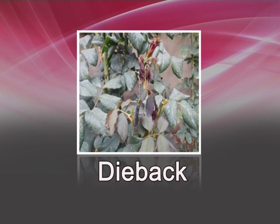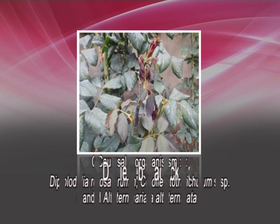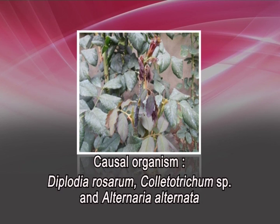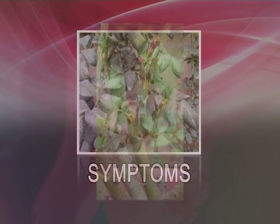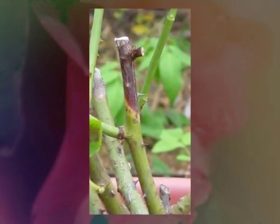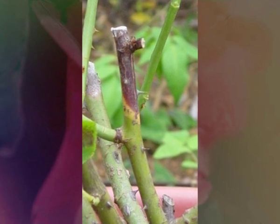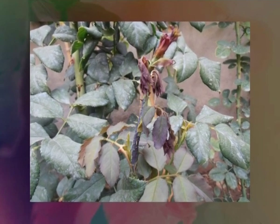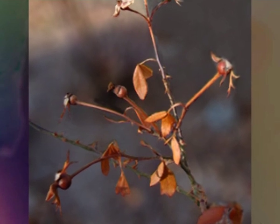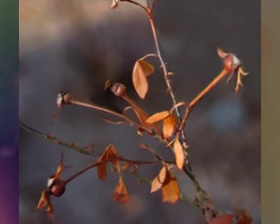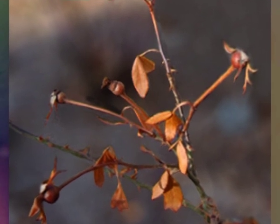The next important disease is dieback. Causal organisms are Diplodia rosarum, Colletotrichum species, and Alternaria alternata. Symptoms: the pruned surface of the twig dries tip downwards and twigs become black in color. The disease passes from the branch twig to the main stem and from there to the root, killing the whole plant. Stem and roots show browning of the internal tissue.